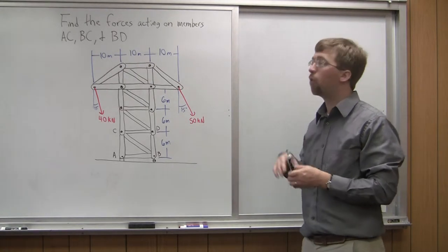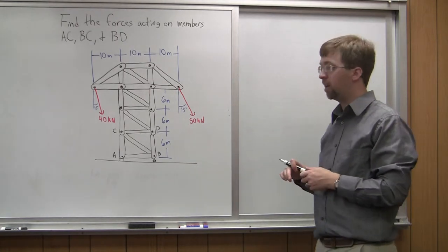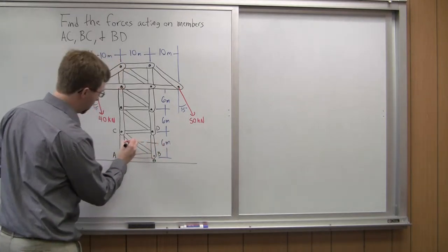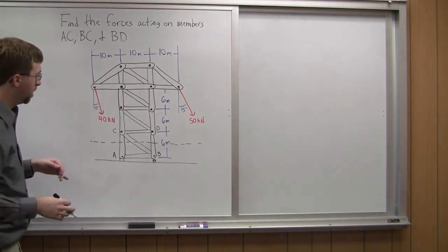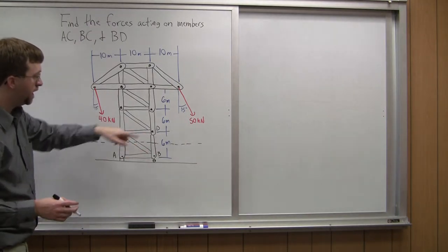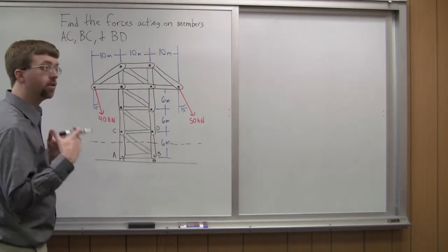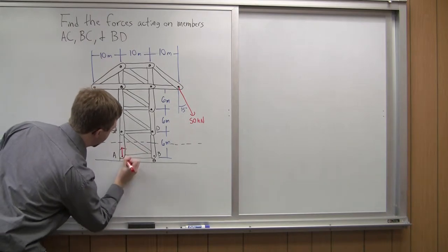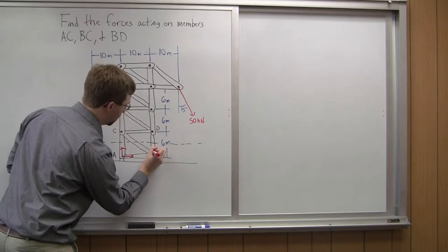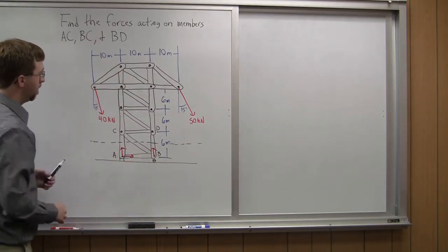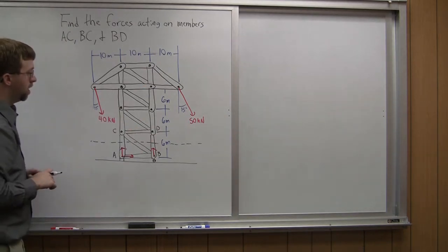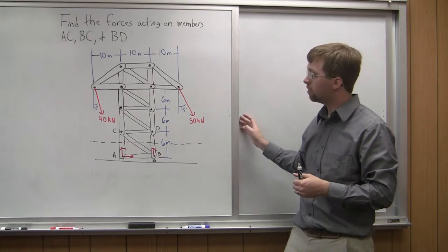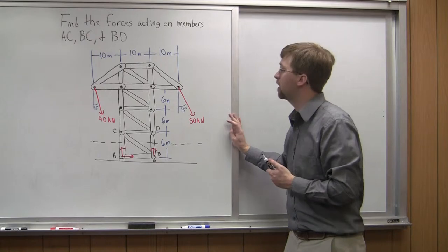For the method of sections, normally we would solve for the reaction forces, but there's a special case here. To cut through the members and get to what we want, we cut right across through AC, BC, and BD all at once — only three members, so this is the proper way to do it. We'd normally have reaction forces in X and Y at the pin joint and roller joint, but if we're looking only at the top section, none of those reaction forces come into play. So we can skip solving for the reaction forces and jump straight to a free body diagram of the top.